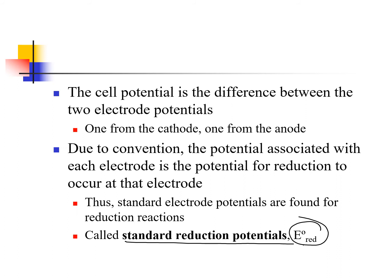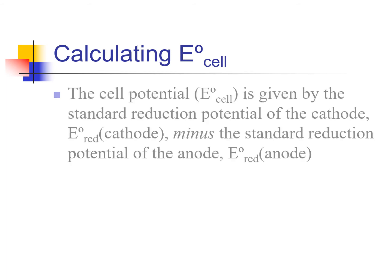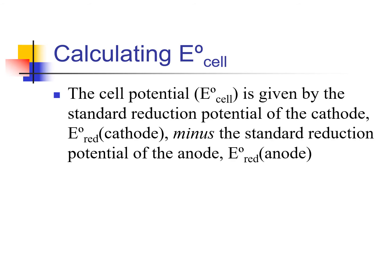For homework problems, you'll look up these values in your book. On the AP test, they will be provided to you in the problem. The cell potential is given by the standard reduction potential of the cathode minus the standard reduction potential of the anode — cathode minus anode. These potentials are all reduction. We look at what's happening at the cathode, subtract from what's happening at the anode.